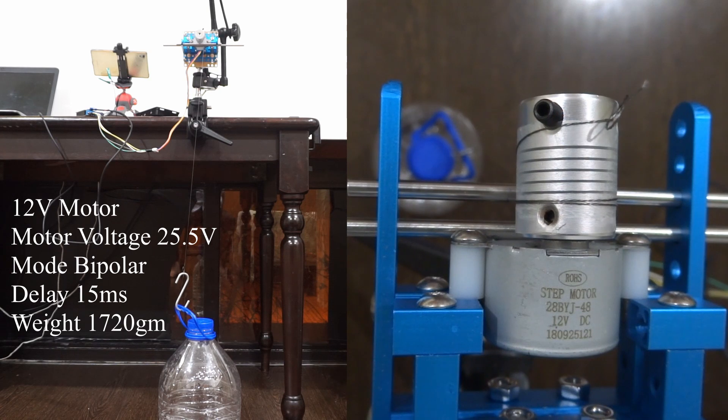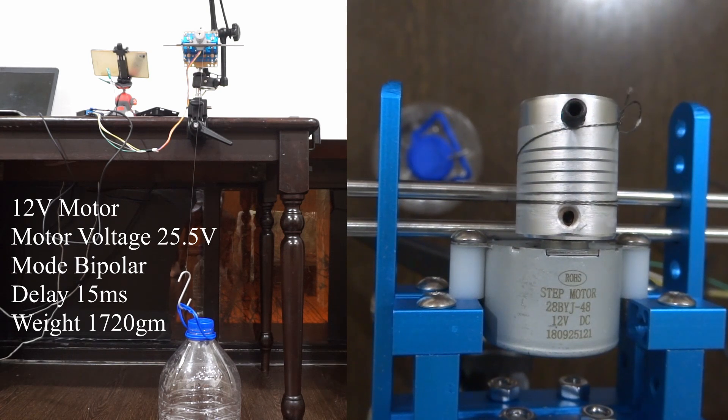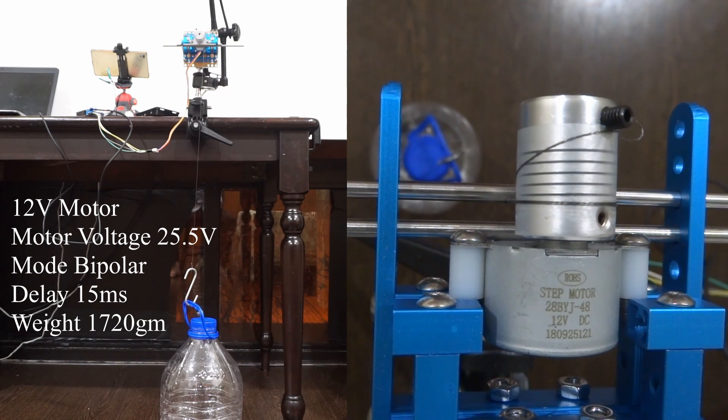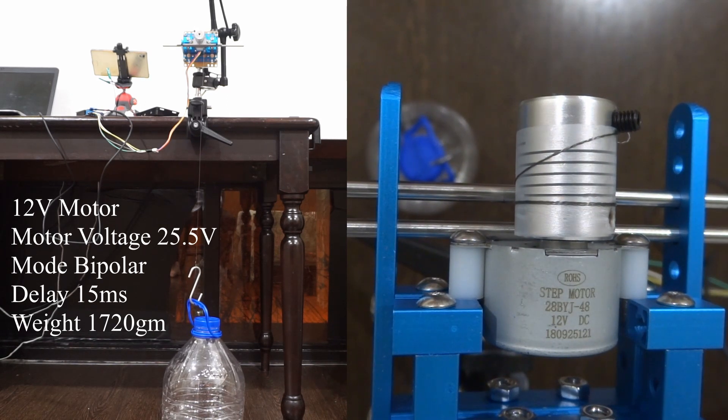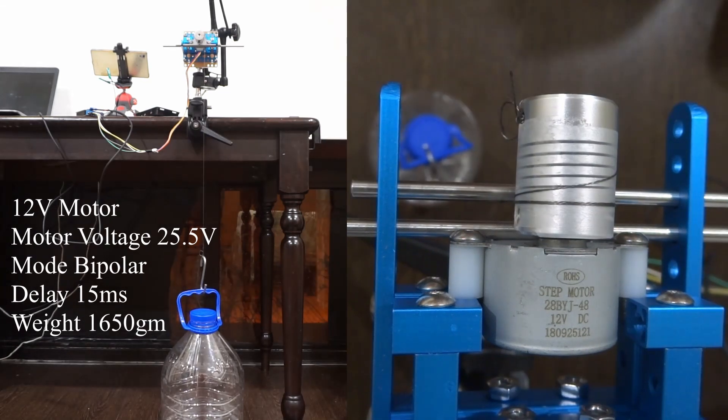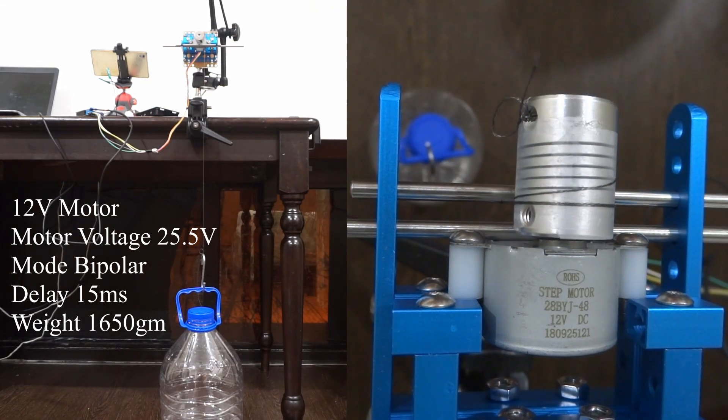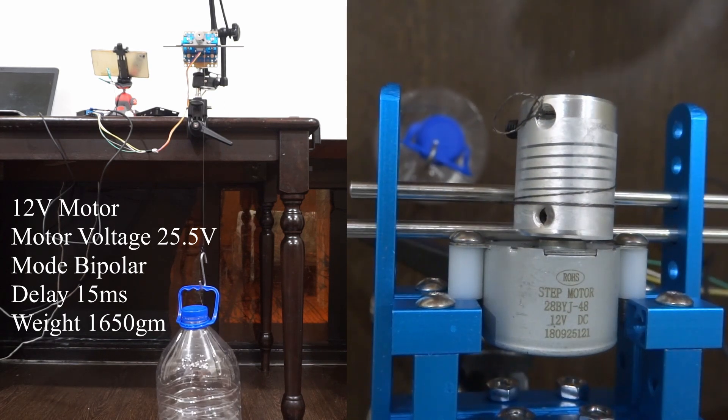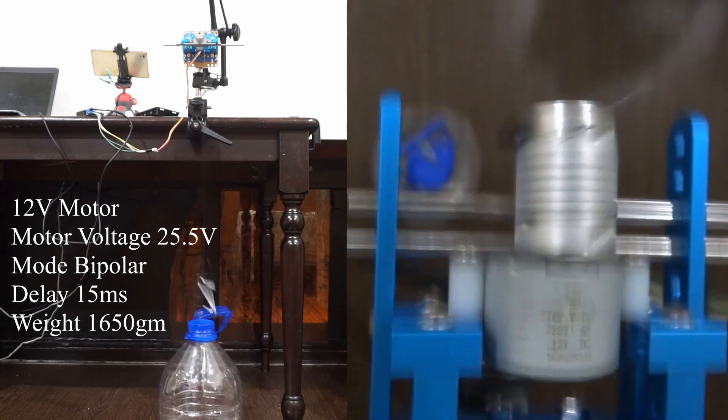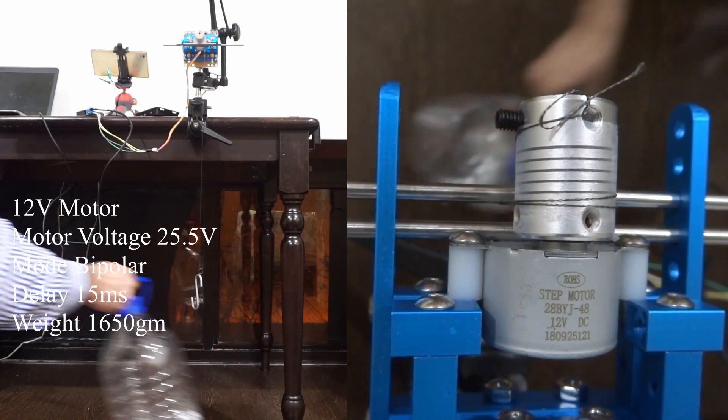Actually torque does not depend upon time. I want to see that at least consistently the motor is working at a particular torque. That's the reason why I want to see that it lifts the weight till the top. Now the weight of the bottle is 1.65kg. It is not able to lift that. The weight of the bottle is now 1.6kg.